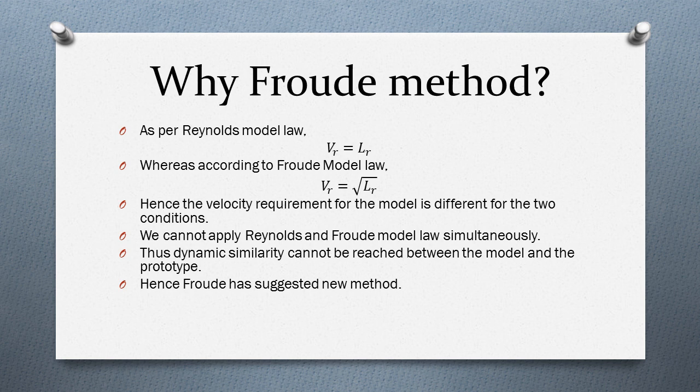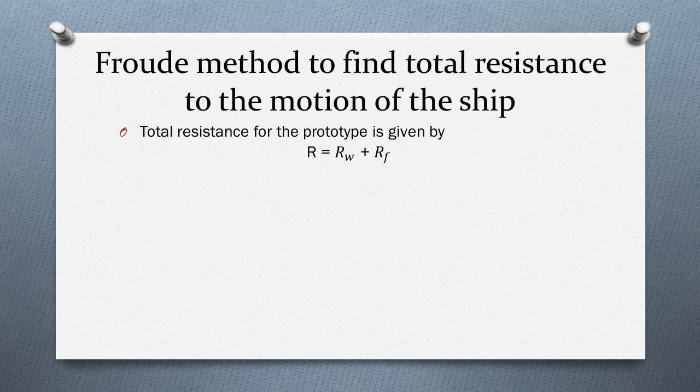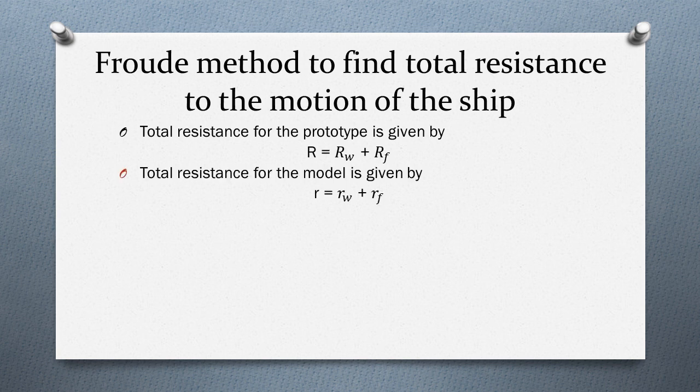Hence Froude suggested a new method. The total resistance for the prototype is given by capital R = Rw + Rf, whereas the total resistance for the model is given by small r = Rw + Rf, with different notations for prototype and model.